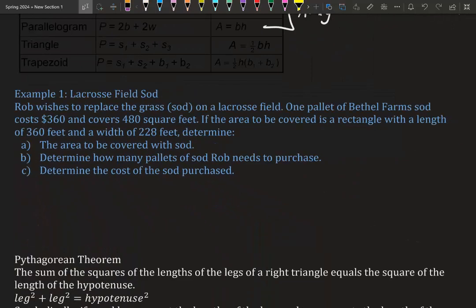Example one: lacrosse field sod. Rob wishes to replace the grass on a lacrosse field. One pallet of Bethel Farm sod costs $360 and covers 480 square feet. The area to be covered is a rectangle with a length of 360 feet and a width of 228 feet. We need to determine the area to be covered, how many pallets Rob needs to purchase, and the total cost. We're working with a rectangle because it gives us two dimensions — a base and a height.